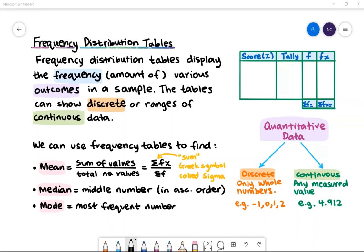Frequency distribution tables display the frequency or amount of various outcomes in a sample. On the right we have the format of a frequency table where we have the headings score which is the given variable x, tally, frequency denoted by the letter f, as well as fx which means the frequency multiplied by x. At the bottom of the frequency table we have the sum of f and the sum of fx. The tables can show discrete or ranges of continuous data.